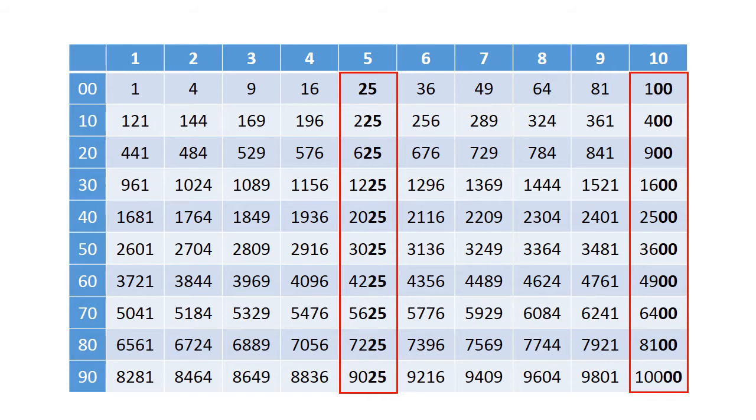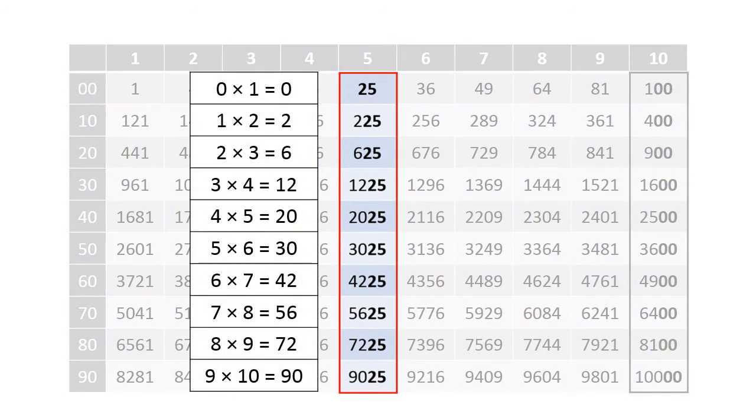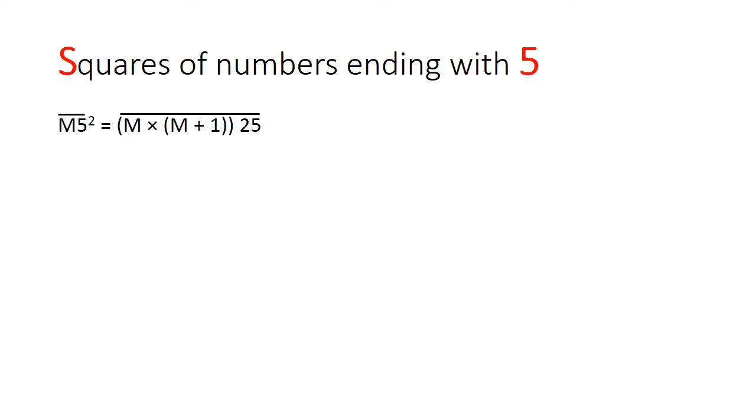What is more interesting is that if we take away the last two digits, the rest of the numbers follow a pattern known as rectangular numbers, which is the product of two consecutive numbers. This leads us to the general rule for squaring numbers ending with 5. The trick is to take the preceding number M and multiply that with M plus 1, and tag a 25 behind it.